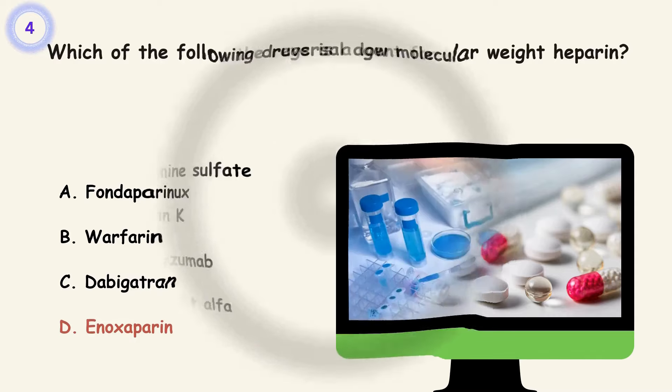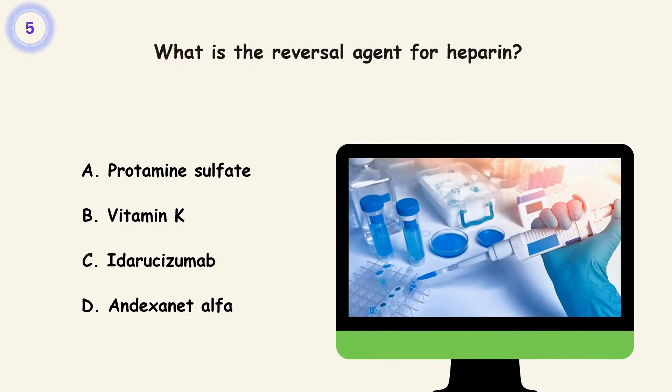Question 5. What is the reversal agent for heparin? A. Protamine sulfate. B. Vitamin K. C. Idarucizumab. D. Andexanet alfa. Answer is A. Protamine sulfate.